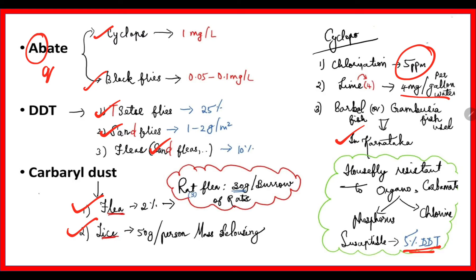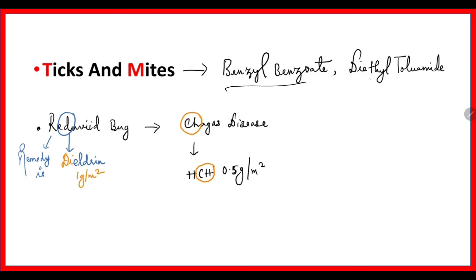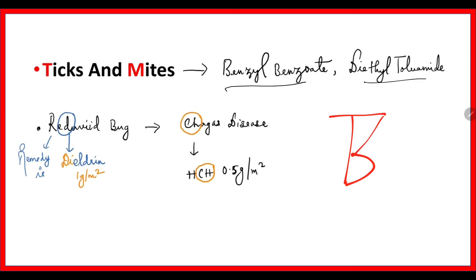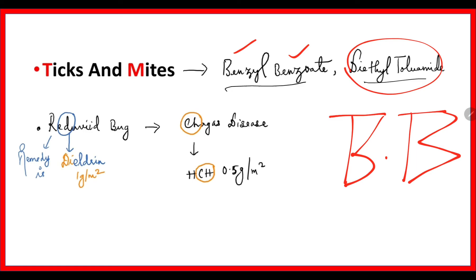One synthetic insecticide which is used for ticks and mites is benzyl benzoate and diethyltoluamide. To easily remember, take 'T' and 'M' and put them together — 'B, B' refers to benzyl benzoate and another option is diethyltoluamide (DEET).